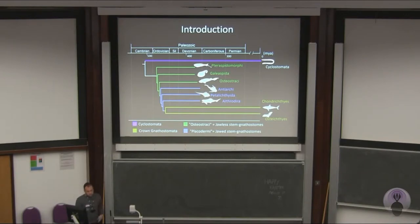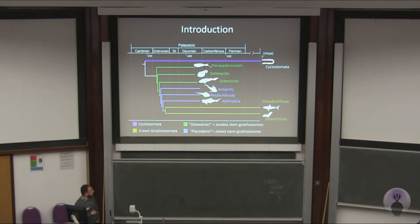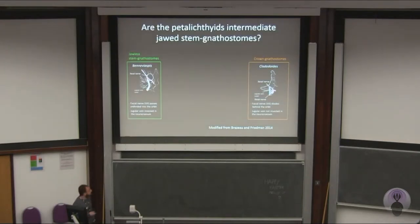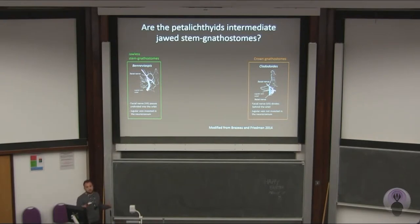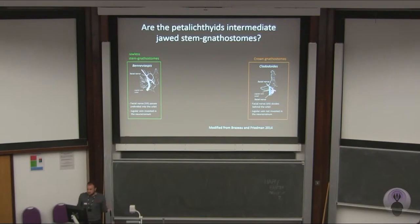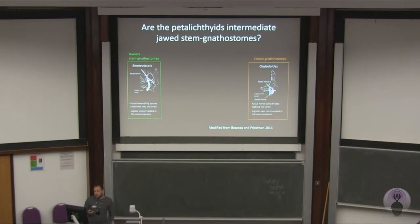Placoderms seem very similar outside, but inside they are quite different from each other. My group, the petalictids, has been overlooked even though they have several features that are remarkably jawless fish-like. I'm studying the internal morphology — the neurocranial characters of this fish — because with internal morphology, especially brain case, brain, nerves, and blood vessel morphology, we can have additional information to help reconstruct character acquisition in gnathostome evolution. Here you can see two major features that distinguish crown gnathostomes from jawless fish.